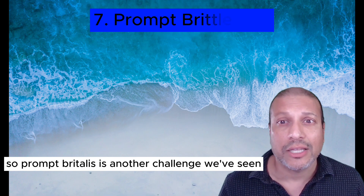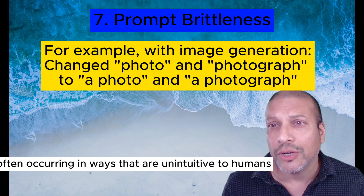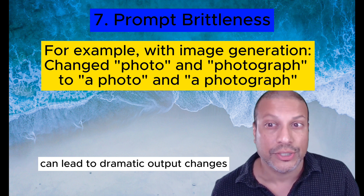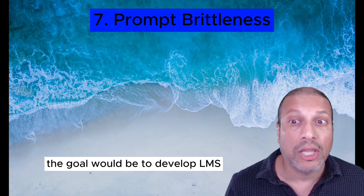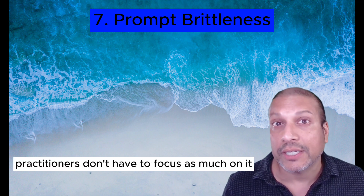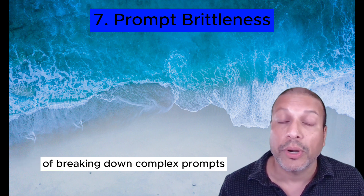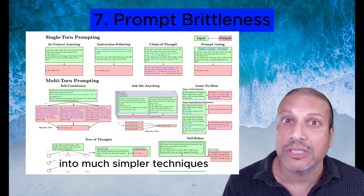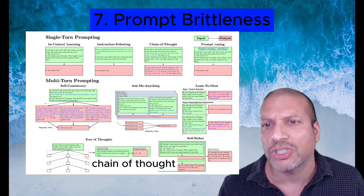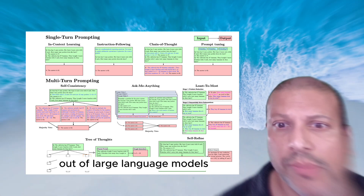Prompt brittleness is another challenge where variations in prompt syntax — often occurring in ways unintuitive to humans — can lead to dramatic output changes. The goal would be to develop LLMs that are much more robust to these prompt styles. Right now, approaches include breaking down complex prompts into simpler techniques and various prompting strategies like chain-of-thought and tree-of-thought to get better information out of large language models.